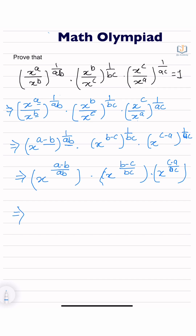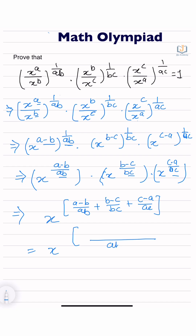Now we are adding the first, second, and third exponents: x to the power a minus b upon ab, plus b minus c upon bc, plus c minus a upon ac. So we get x to the power — expanding: ab plus b plus ab minus ac, plus bc minus ab.